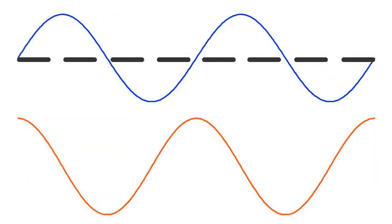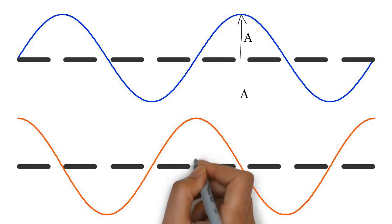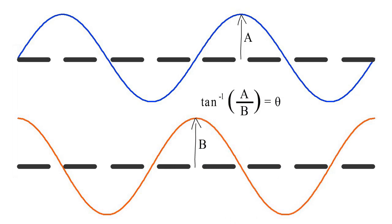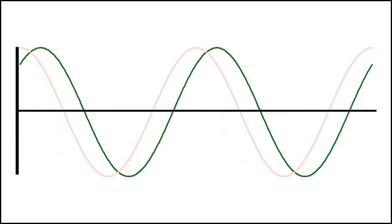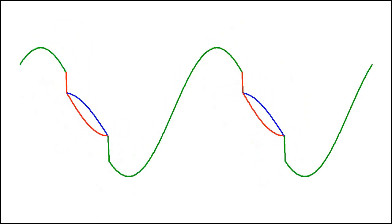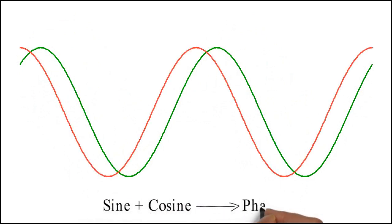So to calculate the phase shift of the wave we made before, we divide the amplitude of the sine wave by the amplitude of the cosine wave, and then take the inverse tangent function. So from the previous example, if my sine wave has an amplitude of 29 and my cosine wave has an amplitude of 32, then to work out the angle, I take the inverse tangent of 29 divided by 32, and that's how I arrived at my result of 42 degrees. So by adding together a sine wave and a cosine wave of the same frequency but different amplitudes, we can change the phase of the resultant wave.